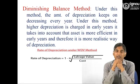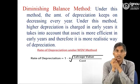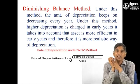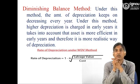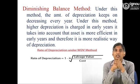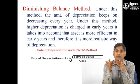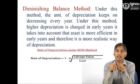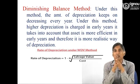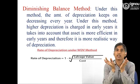Under the diminishing balance method, the amount of depreciation keeps on decreasing every year. Higher depreciation is charged in the early years, which takes into account that the asset is more efficient in early years — making it a more realistic method. In the earlier years when the asset is most efficient, repairs are very less and depreciation is more; in the later years depreciation is less but repairs are more. This gives a true picture of the asset's depreciation over its life.